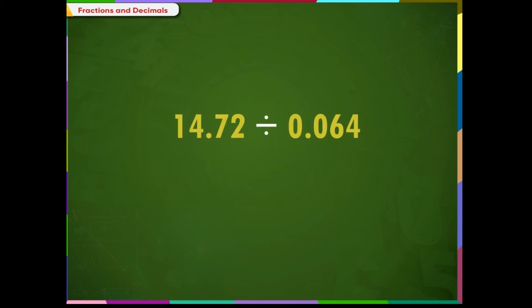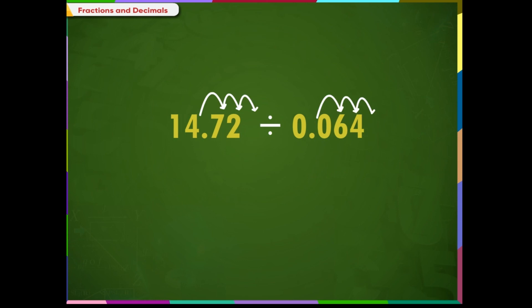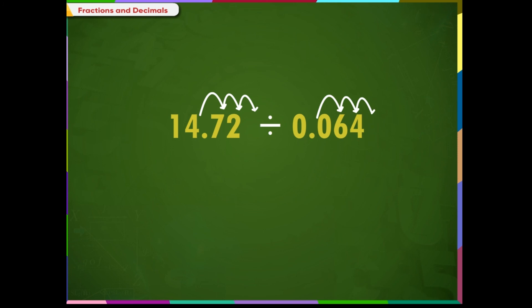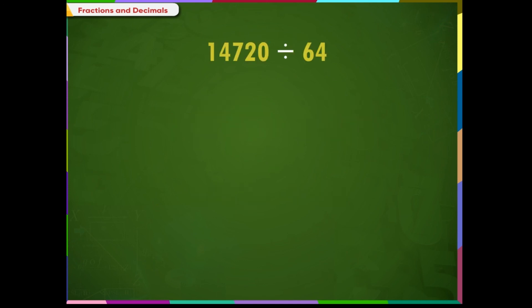Example 3: 14.72 divided by 0.064. In order to make the divisor a whole number, we move the decimal point three times to the right. The decimal point in the dividend is also moved three times towards the right. There is no number in the third place, so a 0 is added to the dividend. Now divide the two numbers using the long division method. The quotient is 230.